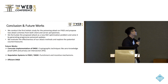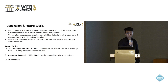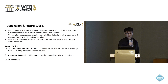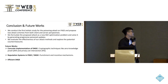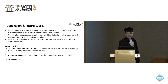In summary, we conducted the first holistic study of poison attacks on FKGE and proposed attack schemes from both client and server perspectives. Second, we formulated the proposed attack as a new KGE optimization problem and solved it by generating progressive poison updates. Finally, we evaluated the effectiveness of our attack method and explored potential countermeasures. For future work, we plan to give a concrete implementation of decentralized KGE using cryptographic technologies like zero-knowledge proof and privacy set intersection, design a reputation system with punishment and incentive mechanisms, and design an efficient DKGE.